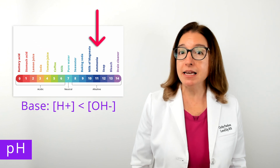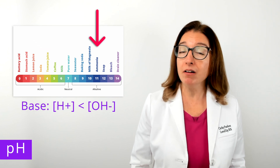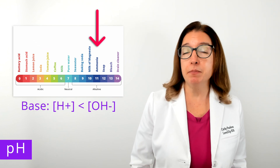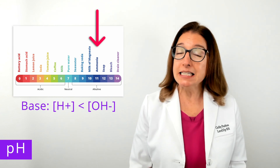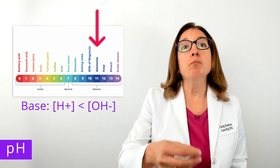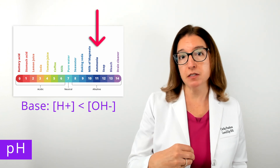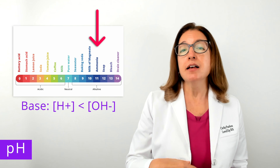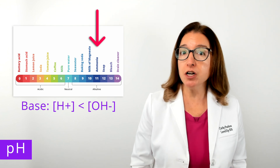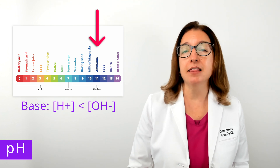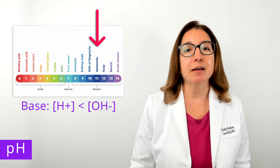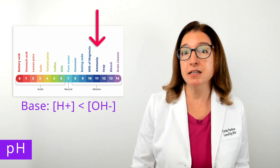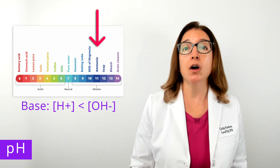A base, or alkaline substance, has a pH that is greater than 7. This means that the substance removes hydrogen ions from the solution such that the amount of hydrogen ions is less than the amount of hydroxide ions. Examples of alkaline substances include ammonia and bleach.